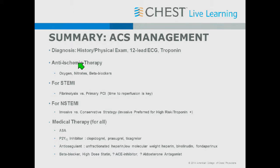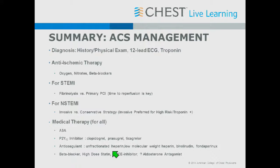Summary: everyone with acute coronary syndrome gets a history and physical, a 12-lead ECG, and a troponin. Anti-ischemic therapy for everyone. If STEMI, give fibrinolytics or primary PCI depending on expected time to reperfusion. If non-ST elevation MI, decide between an invasive or conservative strategy — invasive preferred for troponin-positive or other high-risk patients. Medical therapy includes aspirin, a second antiplatelet agent, an anticoagulant, beta blocker, and statin. Selectively, heart failure and low EF patients also get ACE inhibitors or aldosterone antagonists.